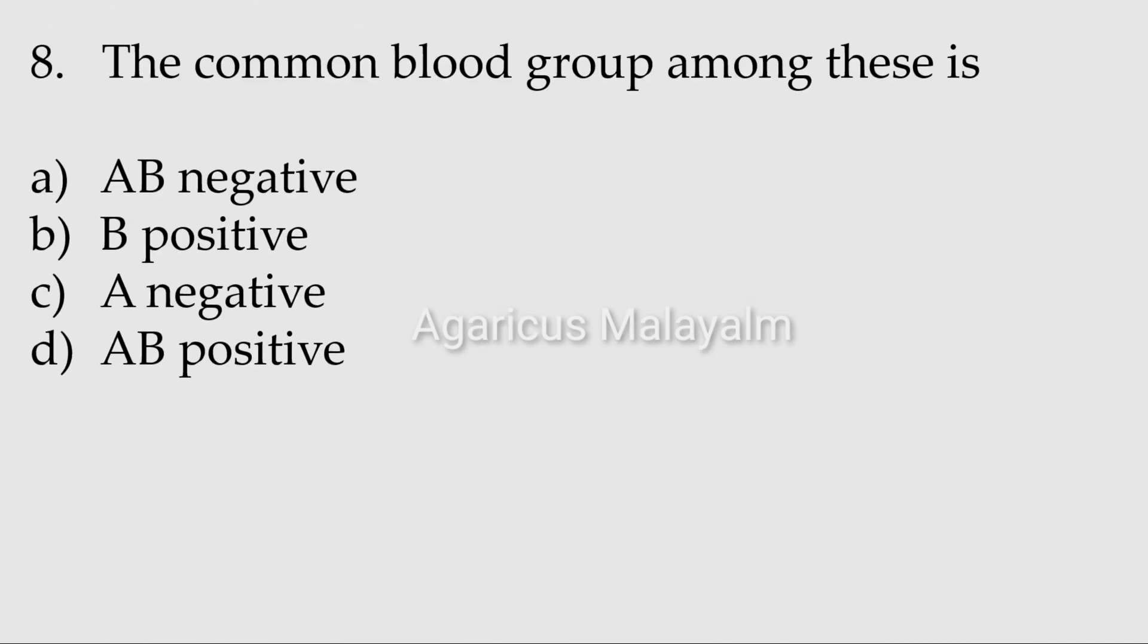Eighth question: The common blood group among these is? Answer options: Option A: AB negative. Option B: B positive. Option C: A negative. Option D: AB positive. Correct answer: Option B, B positive.